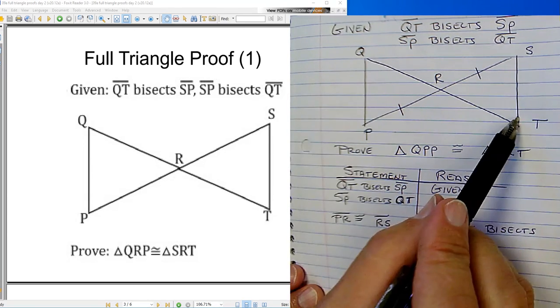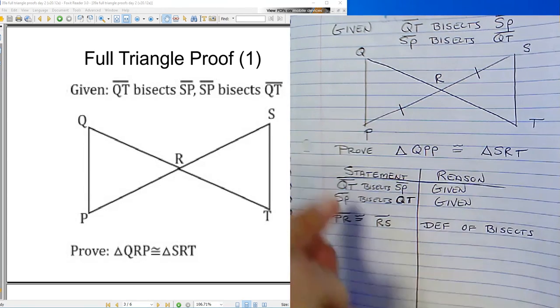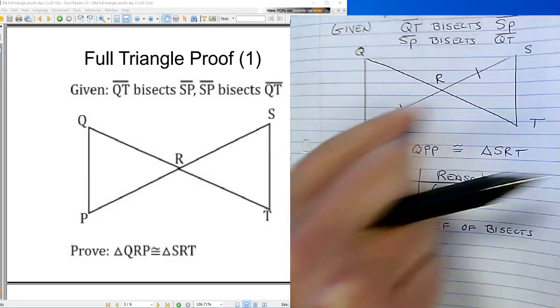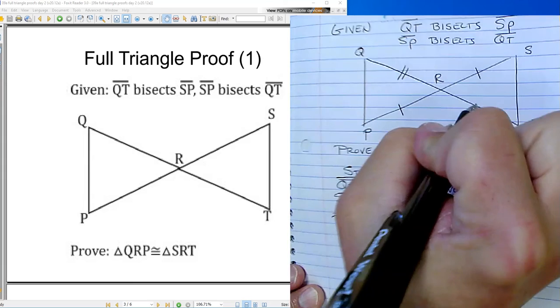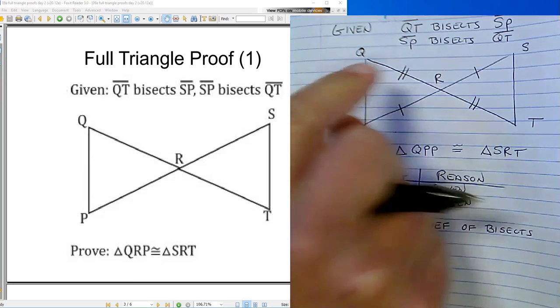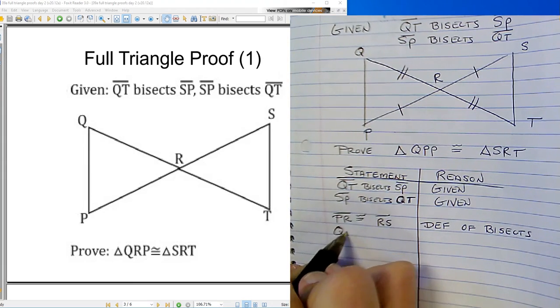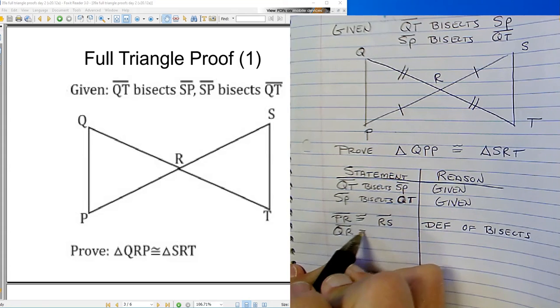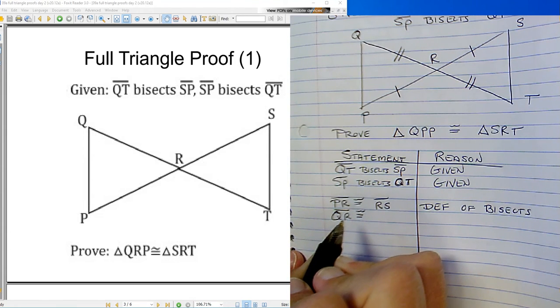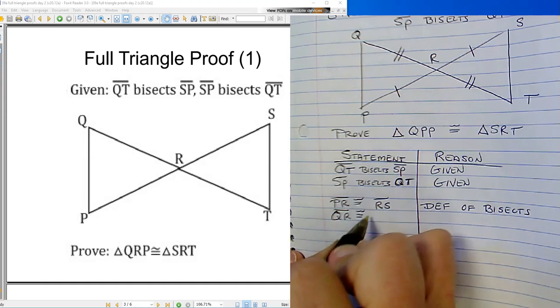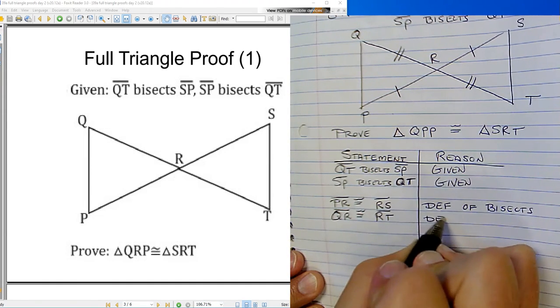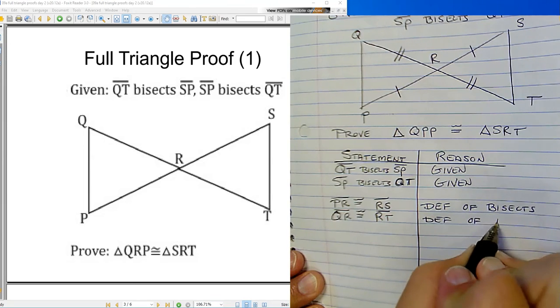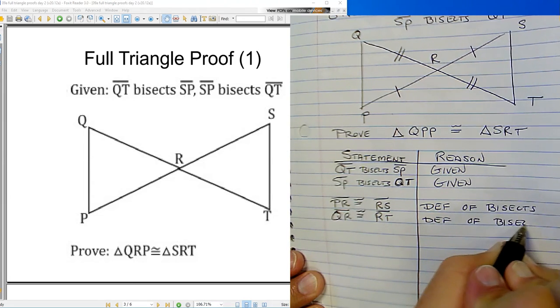Well, I also know that QT, this is like a... Nope, I already used that one. I also know that SP, this is like a knife that cuts this guy in half. So I know that QR is congruent to RT. Definition of bisects.